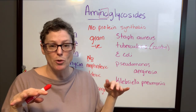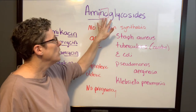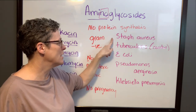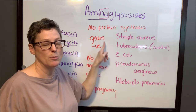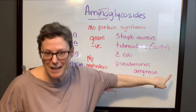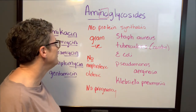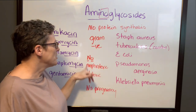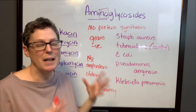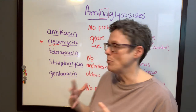To recap: aminoglycosides work only on gram-negative bacteria — stepping on Staph aureus, tuberculosis, E. coli, Pseudomonas aeruginosa, and Klebsiella pneumoniae. They cause nephrotoxicity and ototoxicity as major side effects to watch for. And because of the ant mnemonic, remember they can also cause a hypersensitivity rash. Pretty easy to remember.